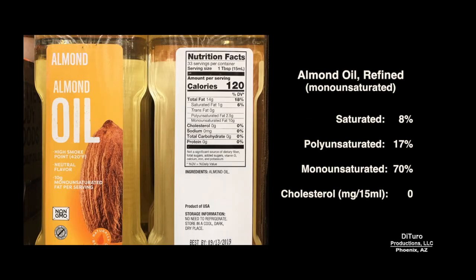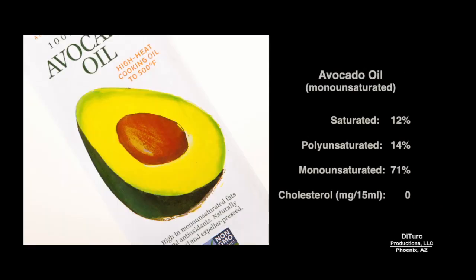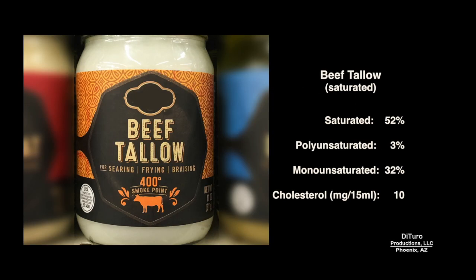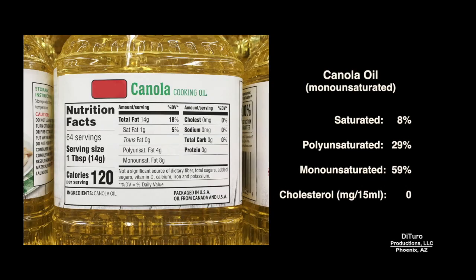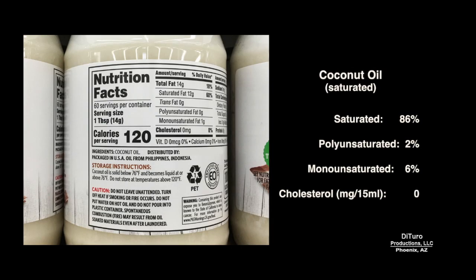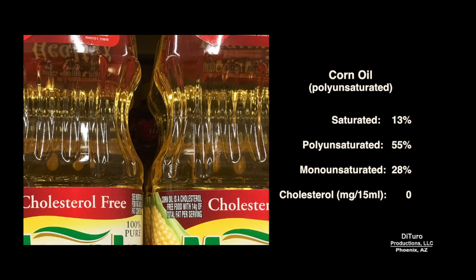The next section lists the three types of fats for 19 common fats and oils in alphabetical order. Almond oil is 70% monounsaturated and has zero cholesterol. Avocado oil is also about 70% monounsaturated and slightly higher in saturated fat than almond oil. Beef tallow is a saturated fat with 10 mg of cholesterol per 15 ml serving. Butter has about the same percentage of saturated fat as beef tallow, but three times the cholesterol. Canola oil is about 88% mono and polyunsaturated fat. Coconut oil has about 86% saturated fat, and corn oil is our first polyunsaturated fat at 55%.